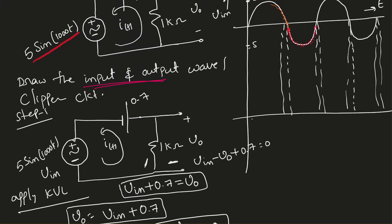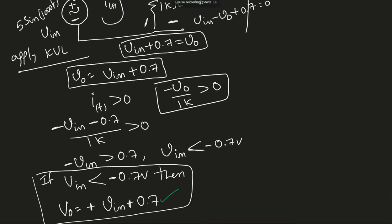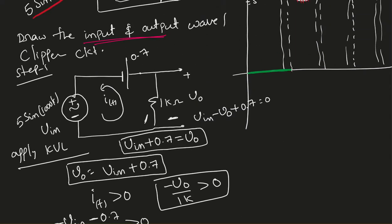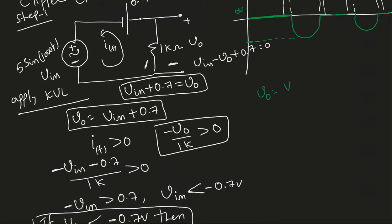Up to negative 0.7 that's my output at zero. After that, the output is going to be V_in plus 0.7, so after negative 0.7 it follows the waveform. The maximum output value up top is 0 volts. At the bottom, V_out = V_in + 0.7, and since V_in at its minimum is negative 5 volts, that gives negative 5 plus 0.7, which equals negative 4.3 volts. So the voltage here must be negative 4.3 volts.